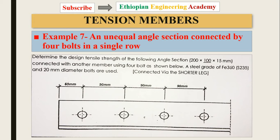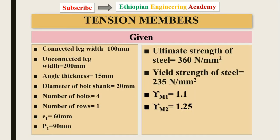The bolts are connected in a single row on an unequal angle section. Determine the design tensile strength of the angle section 200 by 100 by 50 millimeter, connected with another member using four bolts. A steel grade of fy 360 and 20 millimeter diameter bolts are used. The connection is made by the shorter leg.